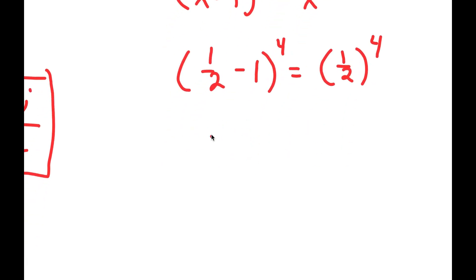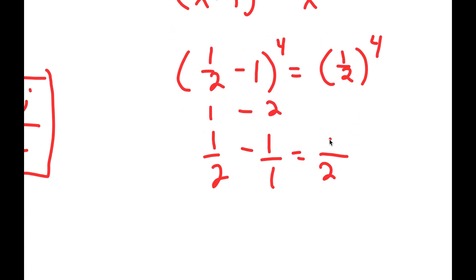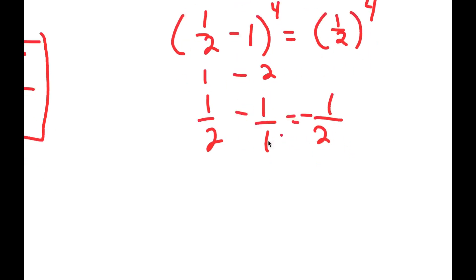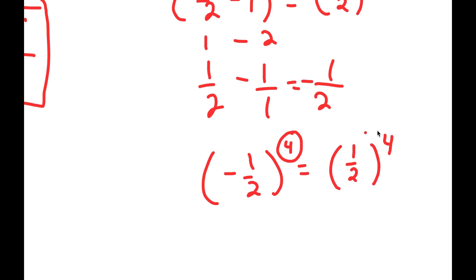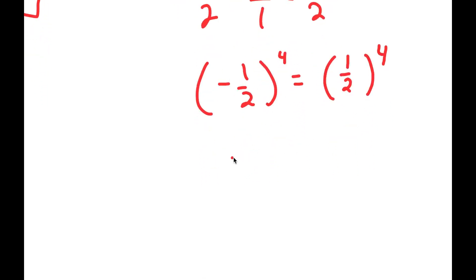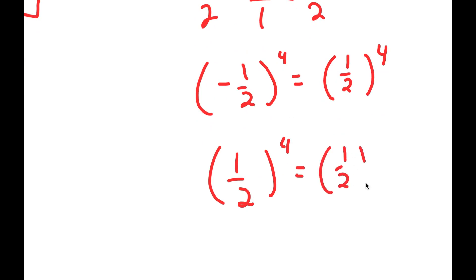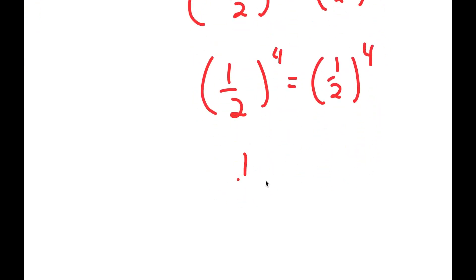Now, 1 half minus 1 equals 1 minus 2 over 2, which is negative 1 half. So I have negative 1 half to the power of 4 equals 1 half to the power of 4. Because the exponent is an even number, this is the same as 1 half to the power of 4 equals 1 half to the power of 4. And 1 half to the power of 4 is 1 over 16, so both sides are equal — the solution is confirmed.